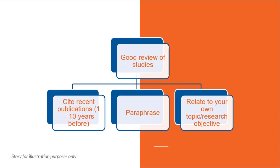Second is paraphrase — I'm going to explain later what paraphrase is, but that's also one of the keys to make a good review of literature. And third, you have to attempt to relate whatever you are discussing, whatever you are reviewing, to your own topic and to your own research objective.